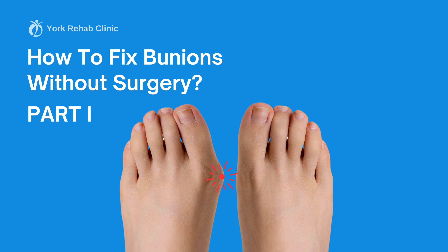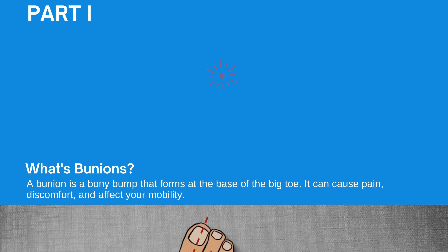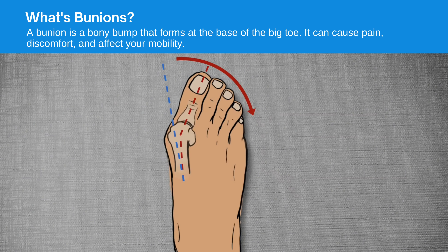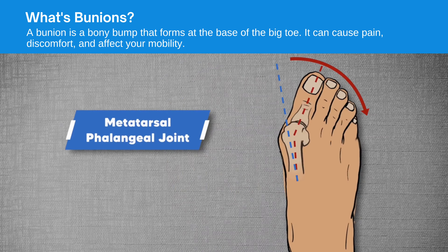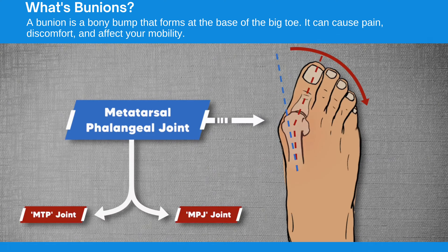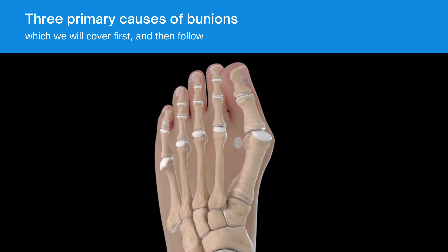How to fix bunions without surgery, part 1. What's a bunion? A bunion is a bony bump that forms at the base of the big toe. It can cause pain, discomfort, and affect your mobility. There are three primary causes of bunions, which we will cover first.